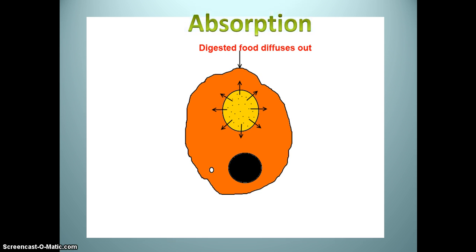Absorption. The digested food present in the food vacuole of amoeba is absorbed directly into the cytoplasm of amoeba cell by diffusion. The digested food just spreads out from the food vacuole into the whole of amoeba cell. After absorption of food, the food vacuole disappears.